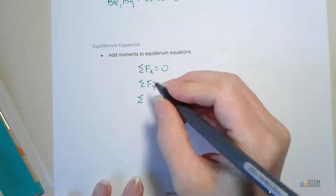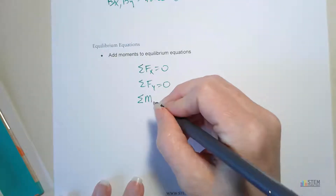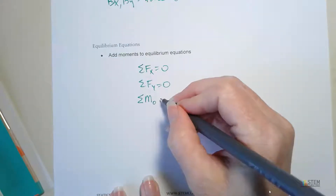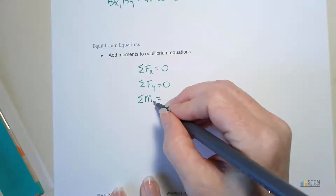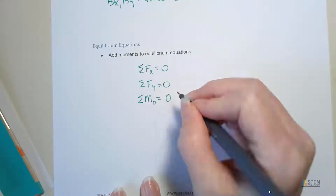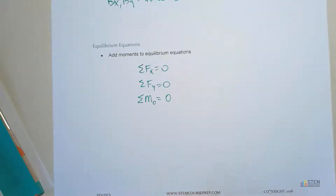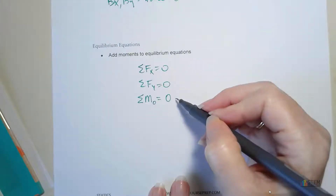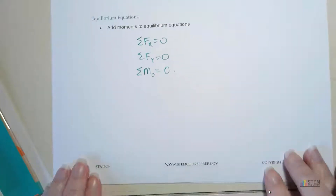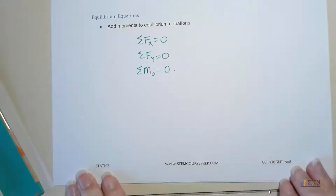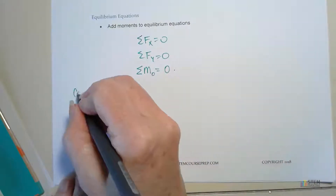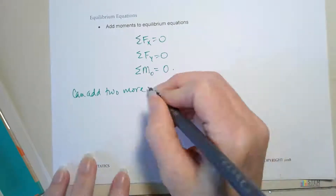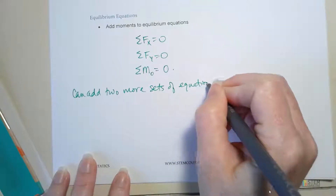For equilibrium, we don't want any sort of movement — we're just looking at things that are still. So the sum of the moments about a point O has to equal zero. Now we've got three equations to use for equilibrium. We can also add two more sets of equations — you're not just limited to these three.